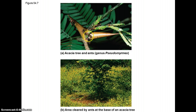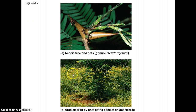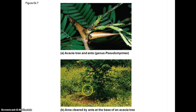But what does the plant get out of this? Janzen did experiments where he removed the ants by fumigating the trees, then monitored them over time. Trees with the ants removed didn't do well: herbivores came and chewed on them, and other plants grew up and out-competed them. The ant benefits the tree by keeping herbivores away — if a herbivore comes and starts munching, the ants swarm and bite it until it leaves. The ants also go out around the plant and mow down surrounding vegetation. It's their home and they take care of it — a very nice example of a mutualism.